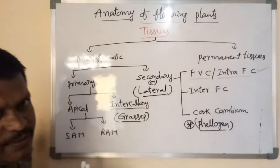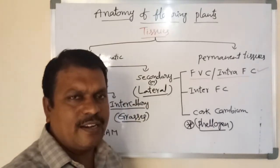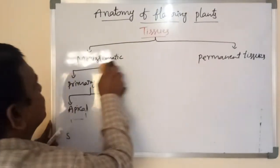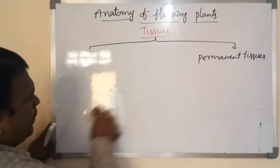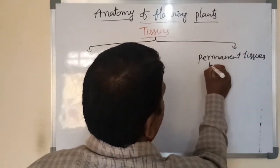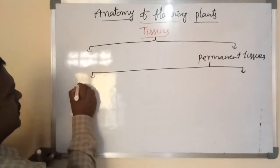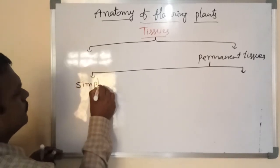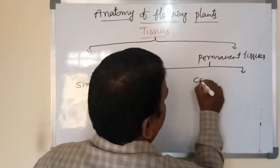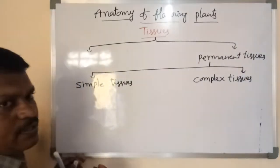You must learn general features of secondary meristems and primary meristems from NCERT paragraph lines. Permanent tissues — broadly two types: simple tissues and complex tissues.